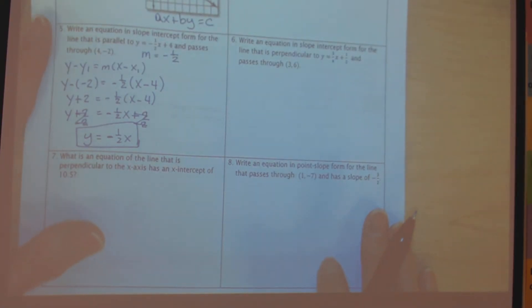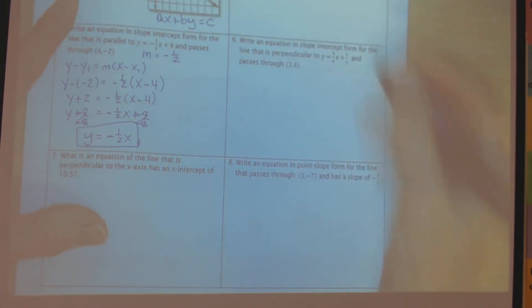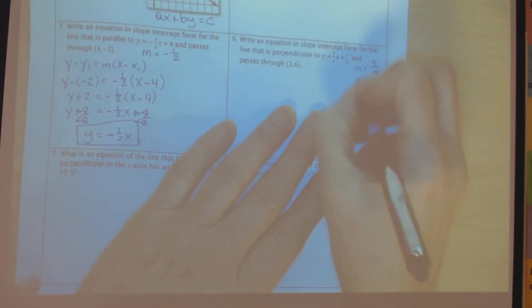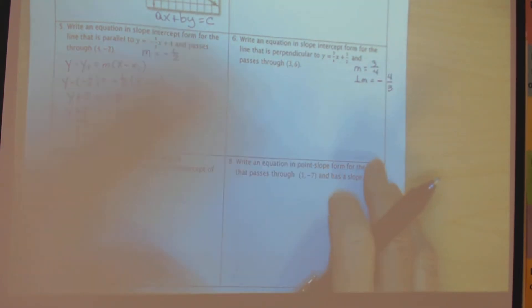Okay, for number six, we have an equation that we need to write in slope-intercept form, but this time we're perpendicular to the line that they give us. The slope of the line that they give us is 3 over 4, so that means the perpendicular slope is going to be its opposite and its reciprocal. You've got to flip it and take the opposite sign.